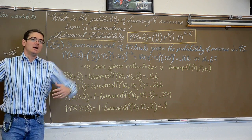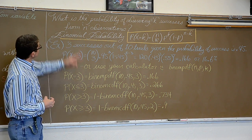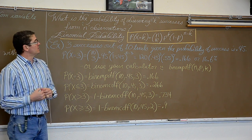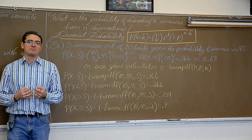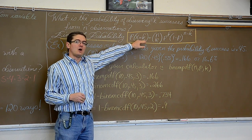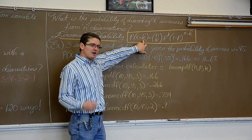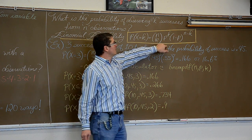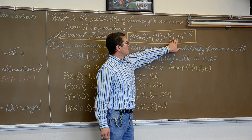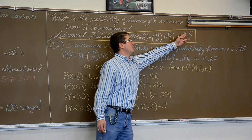I have two chalkboards full of notes for this binomial distribution idea and this is the end of the first part. What is the probability of observing k successes out of n observations? It is not just how many ways you can see a certain number of successes, but finding the actual probability. The binomial probability formula — which will be given to you on the AP exam — is: P(X = k) = (n over k) × p^k × (1−p)^(n−k), where (n over k) is the binomial coefficient, p^k is the probability of success raised to the number of successes, and (1−p)^(n−k) is the probability of failure raised to the number of failures.